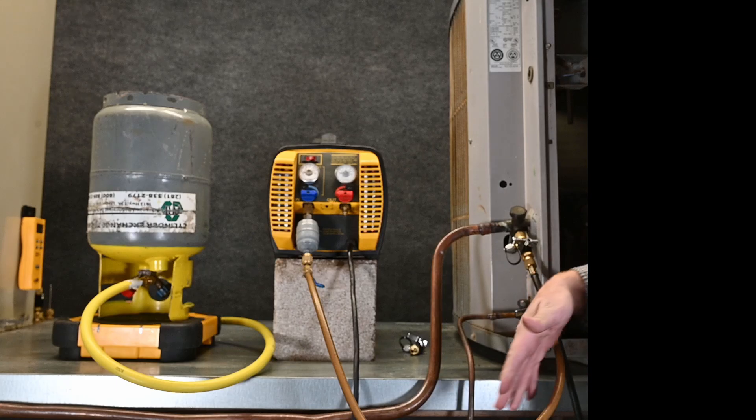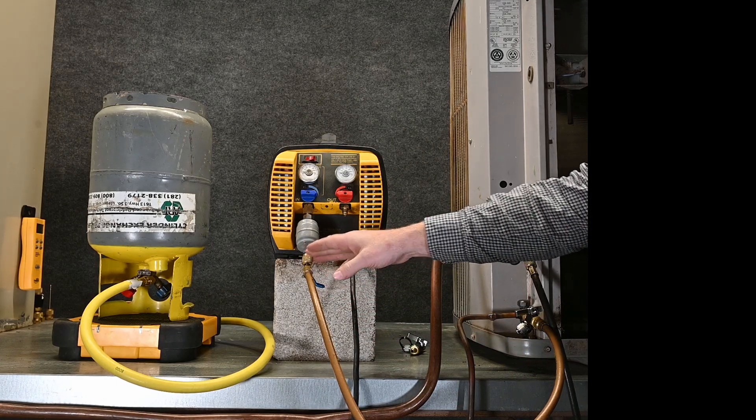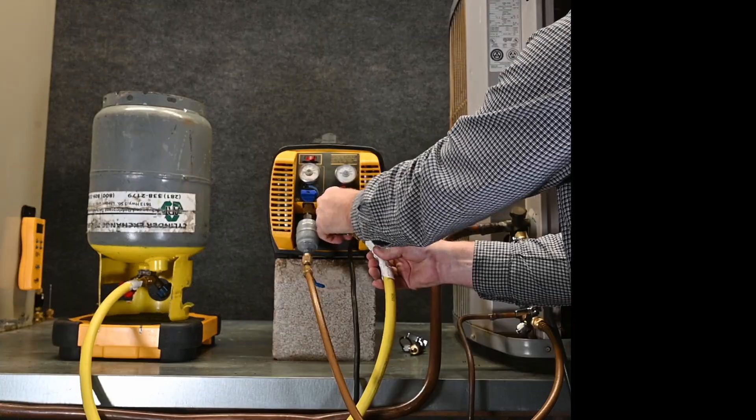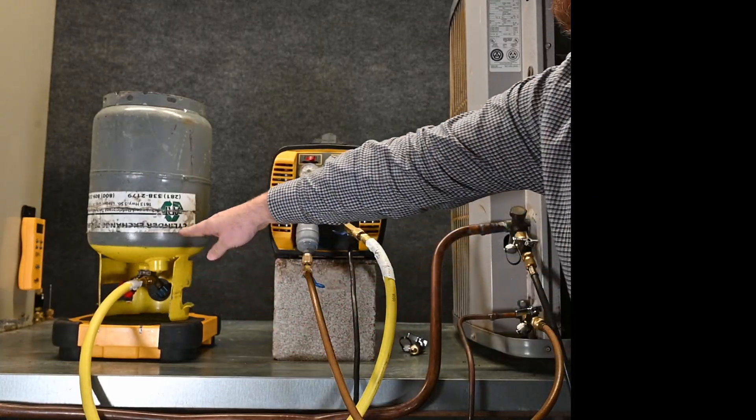So there I would be pulling liquid out of the liquid line to my machine and then pumping it out of my machine through this large hose to the vapor side of my recovery tank.